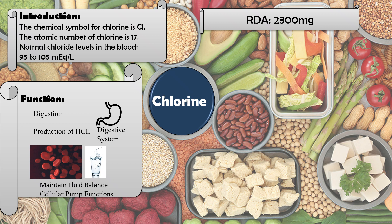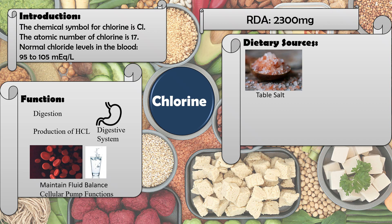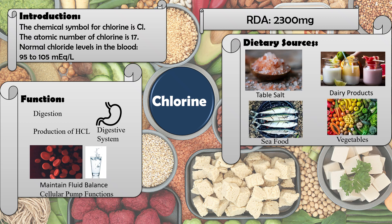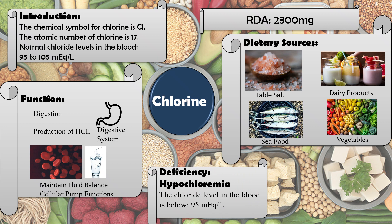Dietary sources of chloride include table salt, dairy products, seafood, and vegetables. If chloride intake is insufficient, levels falling below 95 mEq/L lead to a deficiency condition known as hypochloremia.